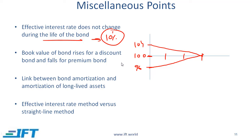We just talked about amortizing the discount, and we use the term amortize. In the previous reading on long-lived assets, we also used the terms depreciation and amortization. So when we used amortize in the previous reading on long-lived assets and when we use the term amortize here, is it the same thing or different? There is actually a similarity. What do you do when you amortize or depreciate? You have an asset, for example — let's take a very simple example.